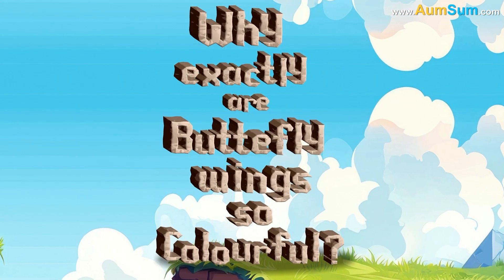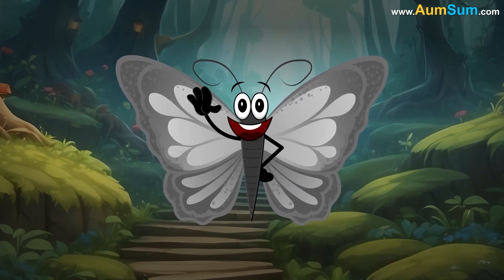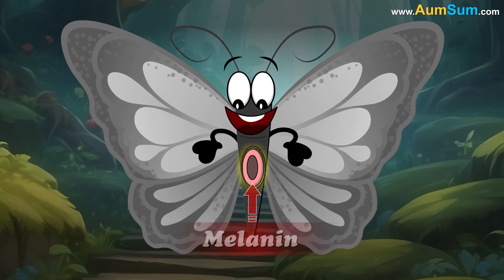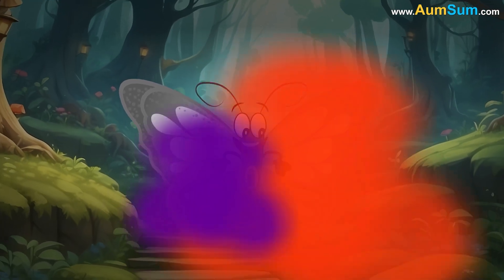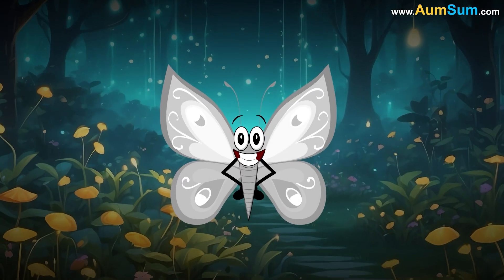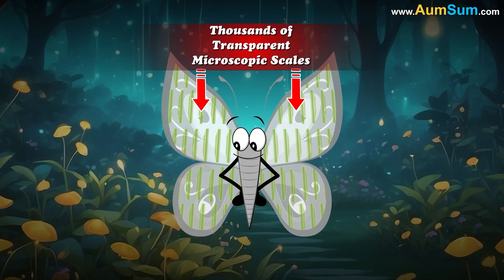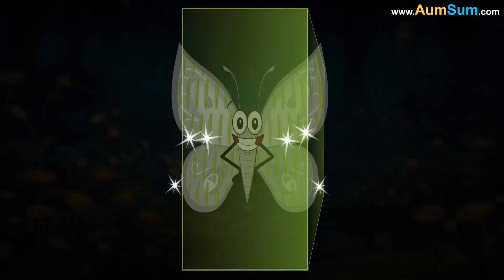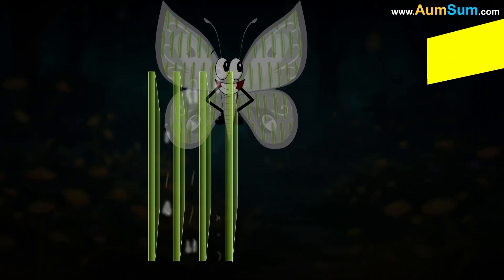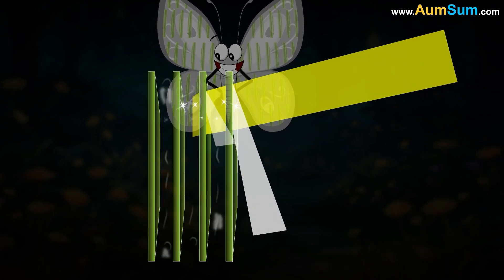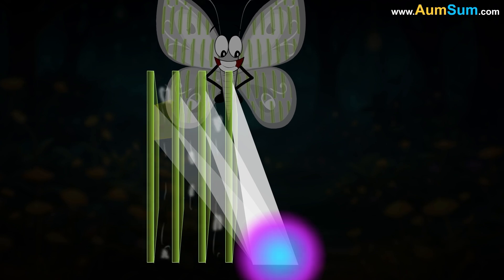Why exactly are butterfly wings so colorful? Firstly, butterflies get their color from chemical pigments such as melanin, which absorbs certain wavelengths of light while reflecting others. Secondly, butterfly wings are made up of thousands of transparent microscopic scales, and each scale has multiple layers separated by air. When light passes through these scales, it is reflected multiple times, and these reflections compound one another and intensify the colors.